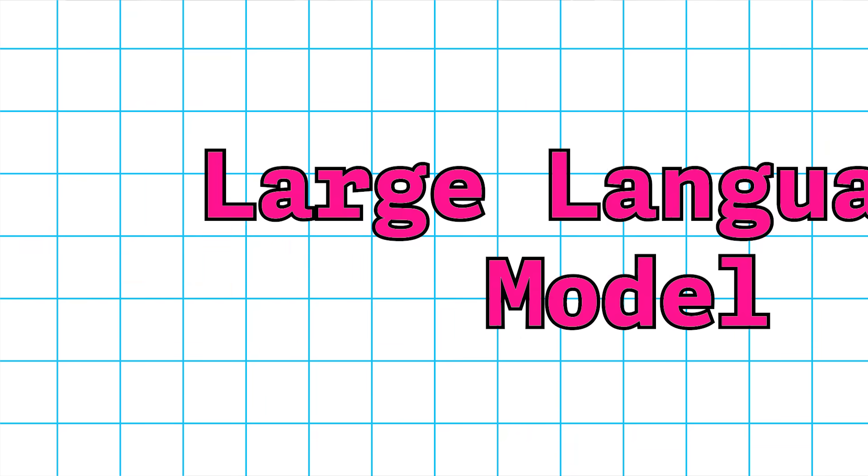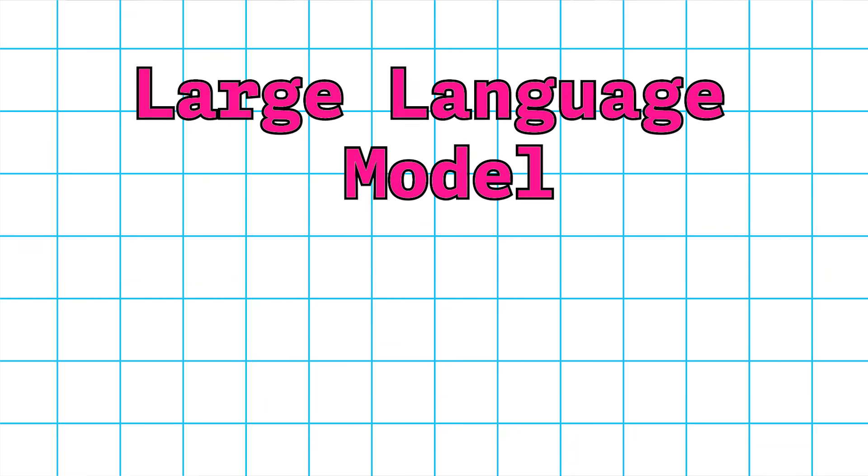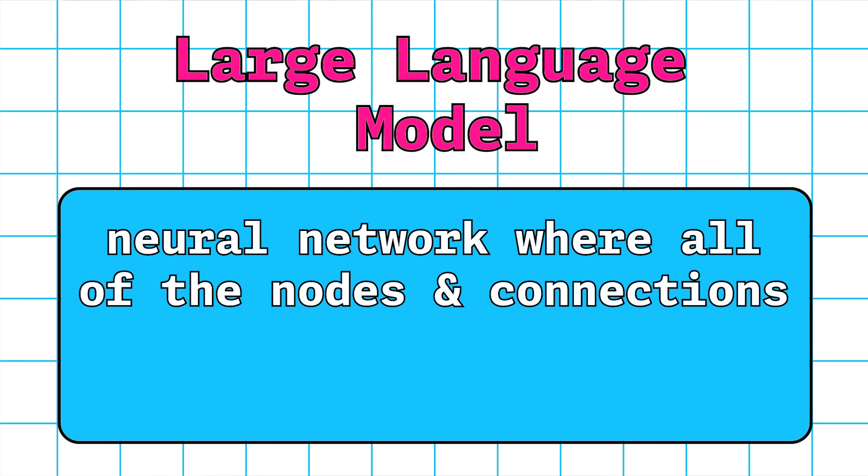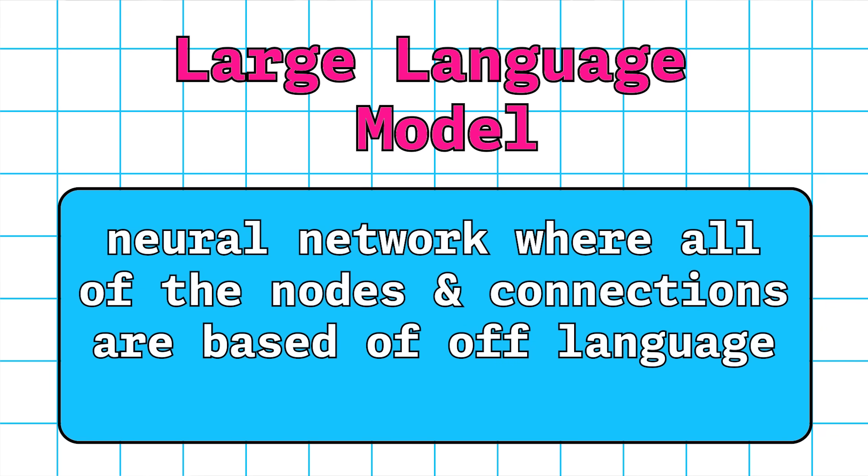Within the taxonomy of neural networks, there is a subset called the large language model. The large language model is essentially a neural network where all of the nodes and connections are based off of language and words. The 'large' in large language model is actually a bit of an understatement, because a lot of these LLMs are trained on data collected off of the open internet, which could be petabytes of text-based information. As a result of training on this much information, these LLMs can end up with what are called parameters in the order of billions or trillions.